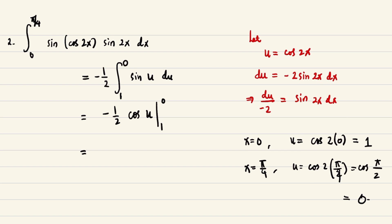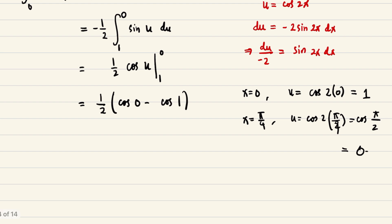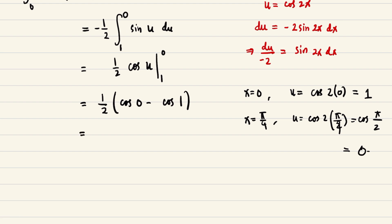We will evaluate now. So 1/2 times, start with 0, cosine of 0 minus cosine of 1. Cosine of 0, that's equal to 1. So our new answer will be 1/2 minus cosine of 1 over 2. This will be the answer. If you have any questions or clarifications, please let me know so that we can discuss that.